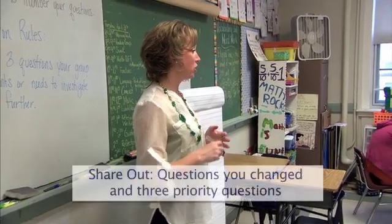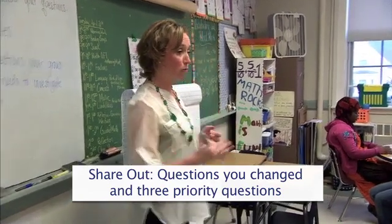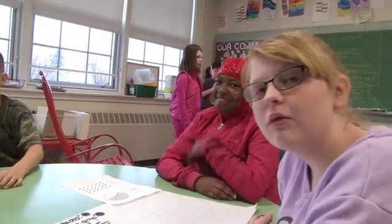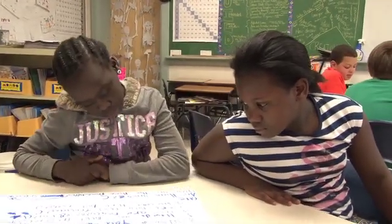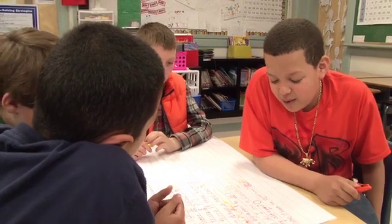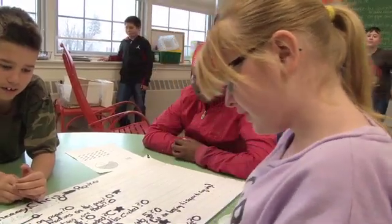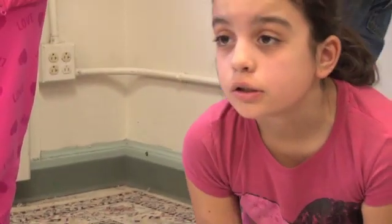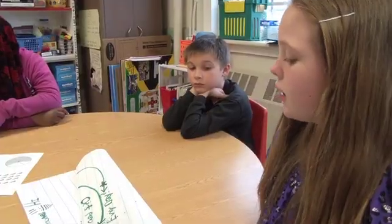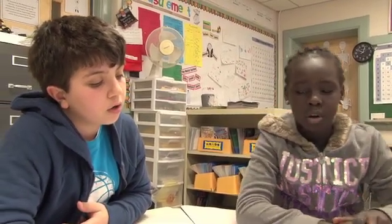The teacher asks groups to share. One group reports: the closed one was 'Are they equal?' and the open one is 'Why are they equal?' Another example: 'Why are they aligned?' changed to 'Are they aligned?' And closed to open: 'Is it equal?' became 'Why is it equal?' Three priority questions shared: 'Why are there equal signs?' 'What are fractions?' 'Why are there 24 fraction symbols?' 'How can we use it every day?' 'Why are some of them shaded and some are not?'